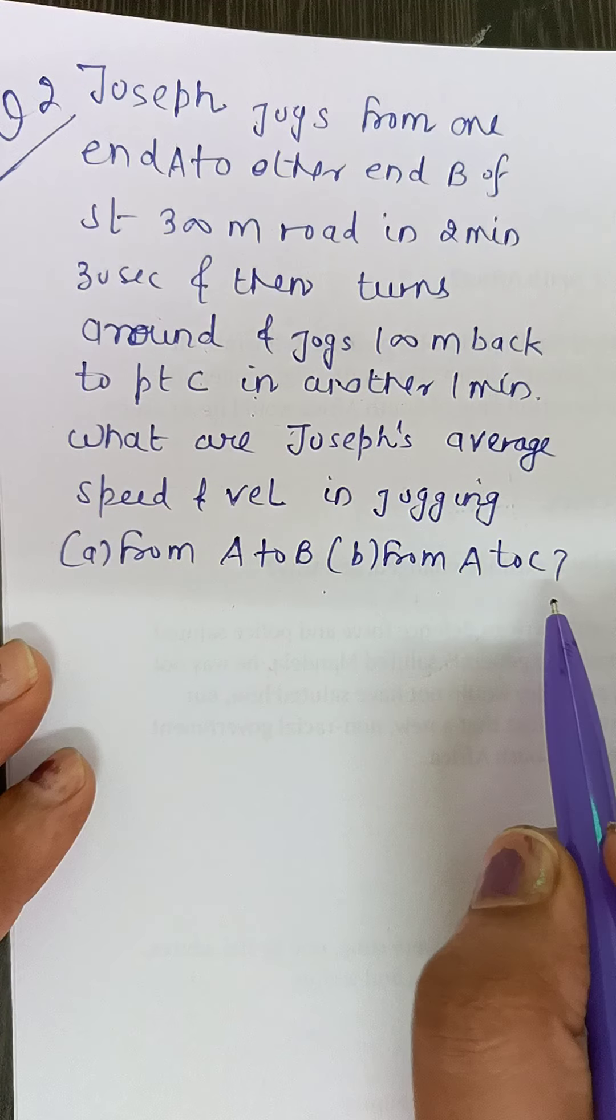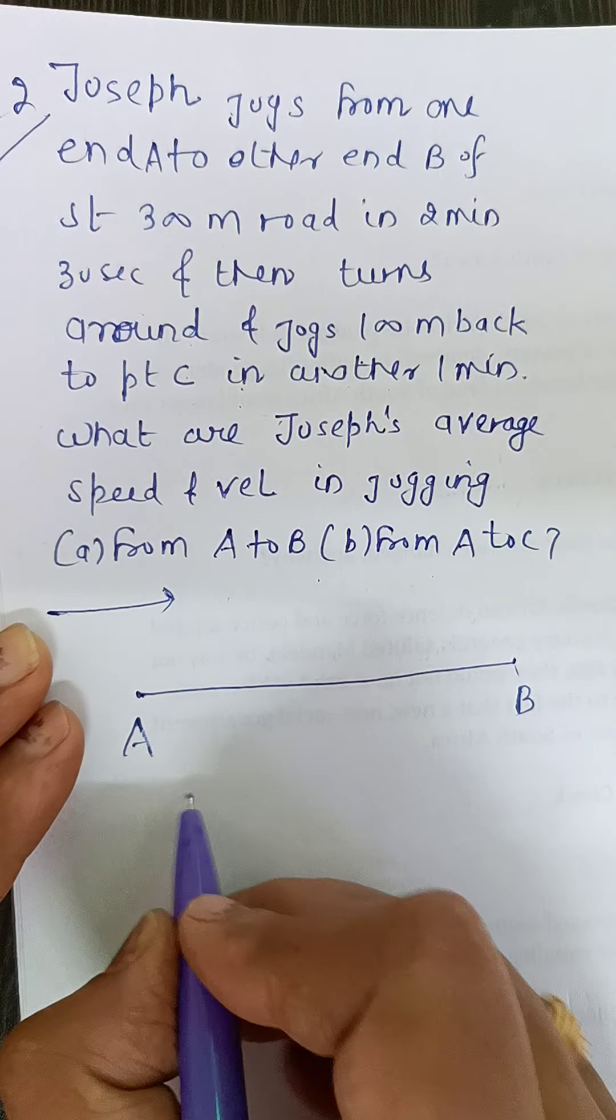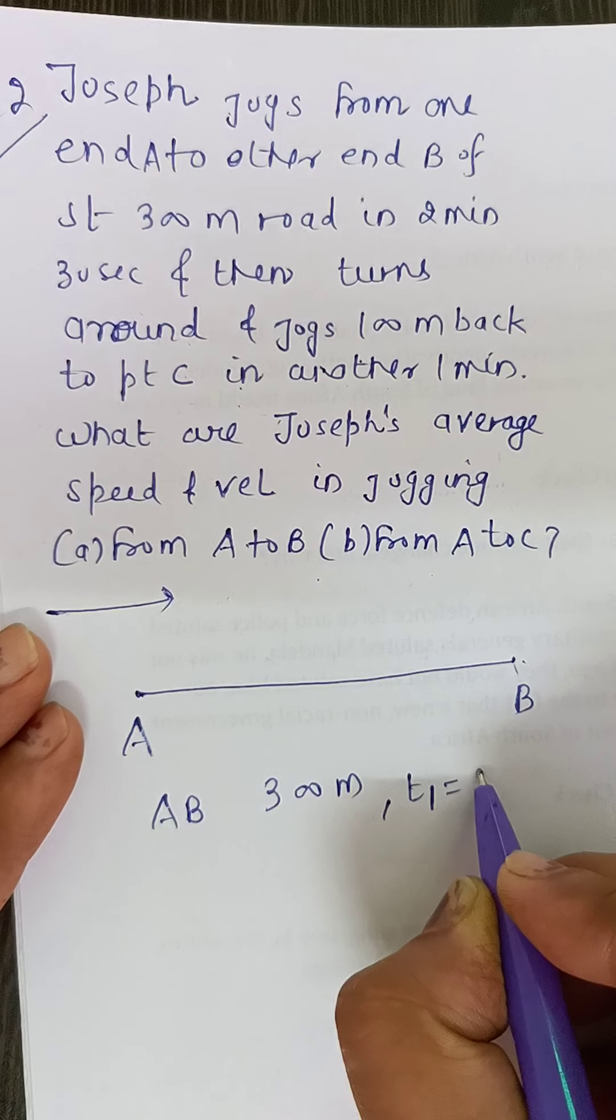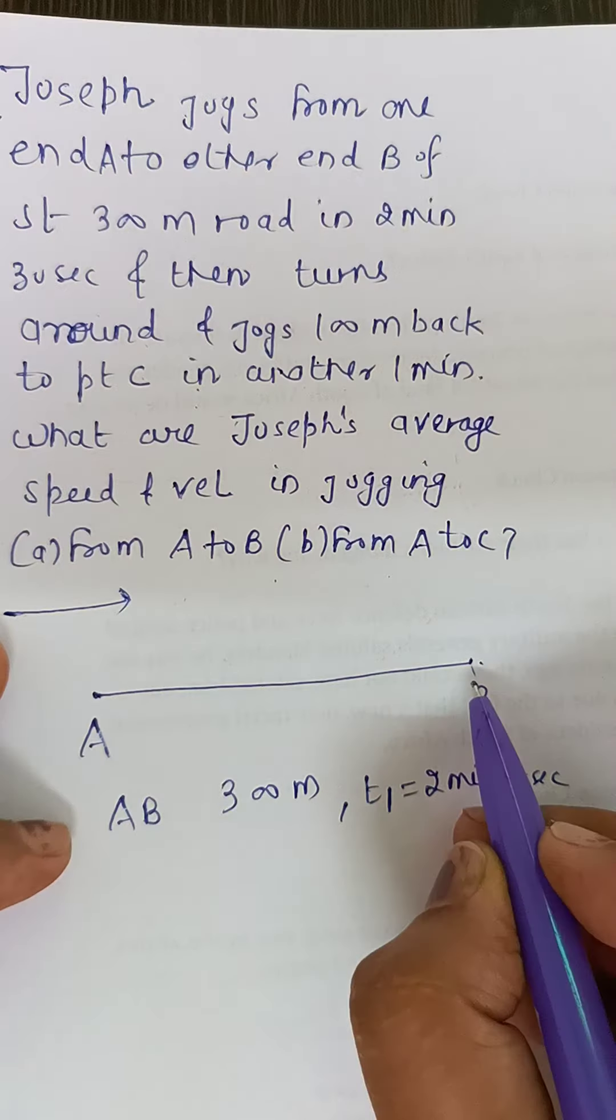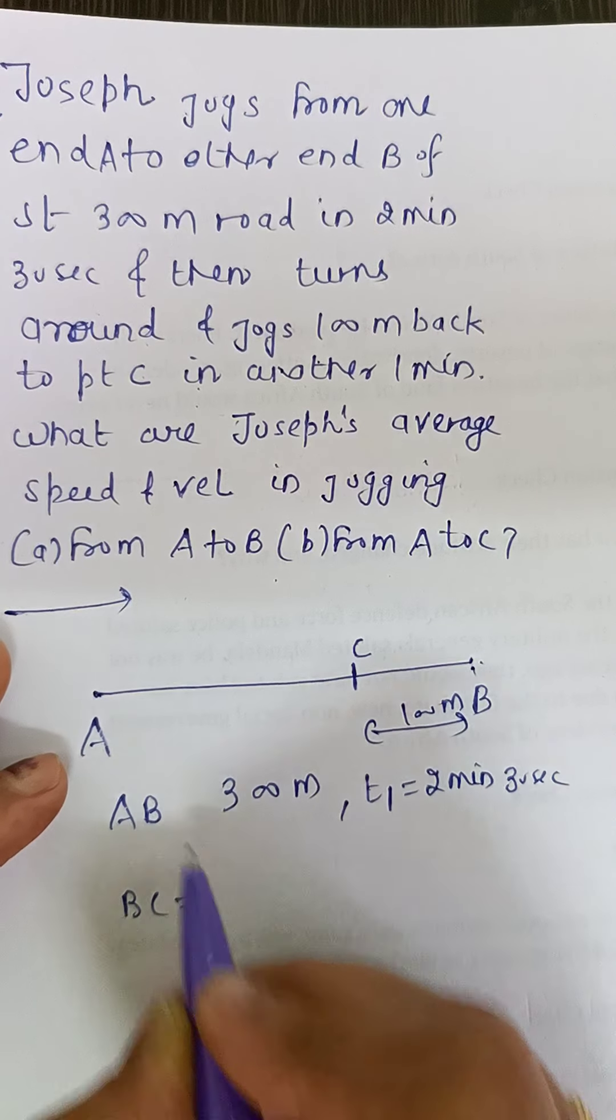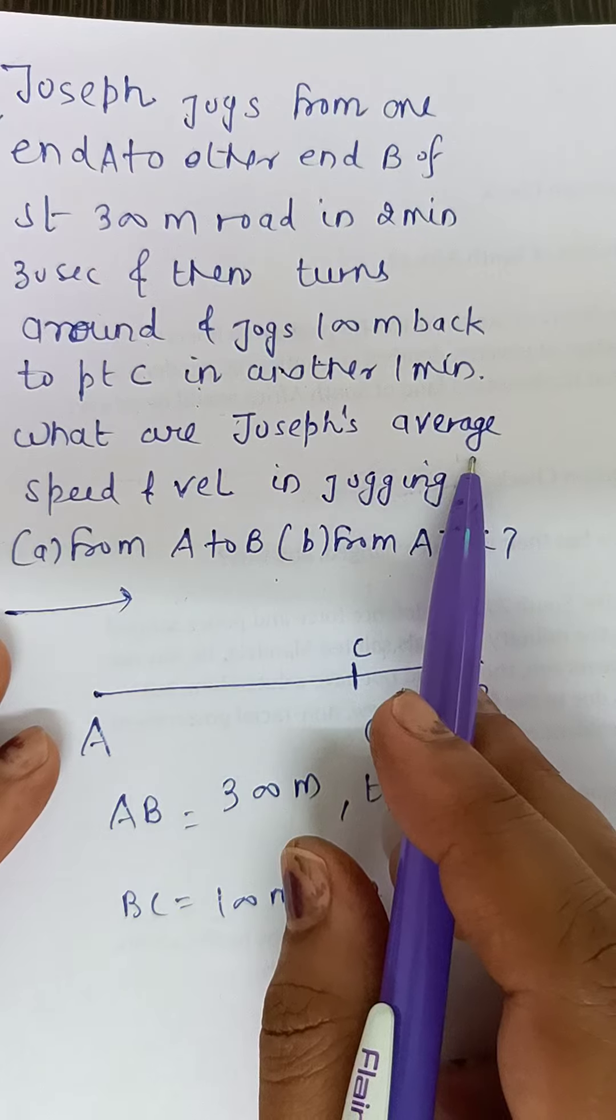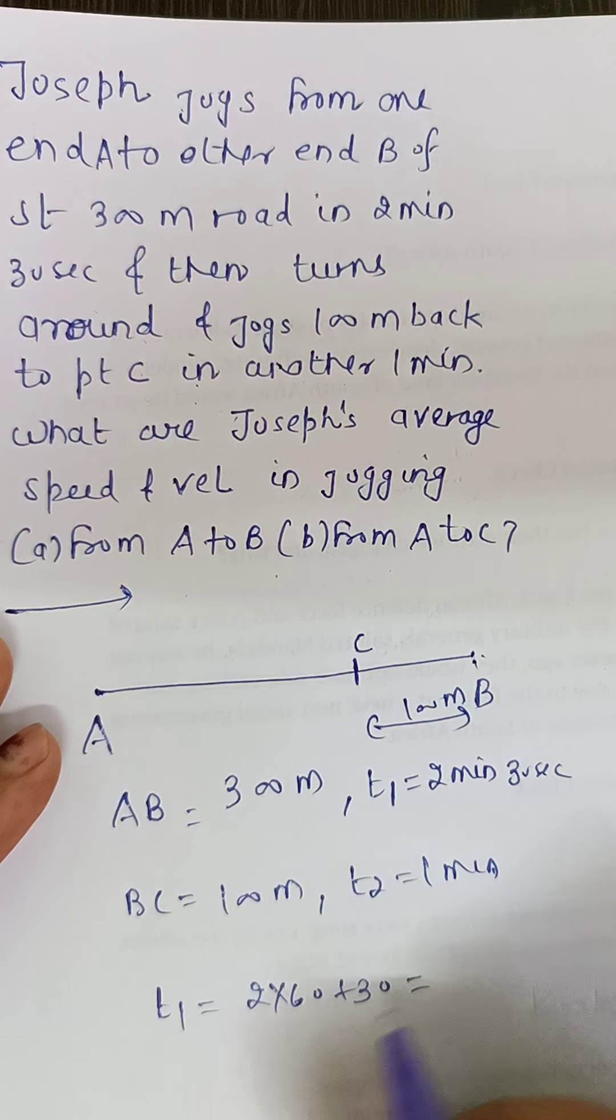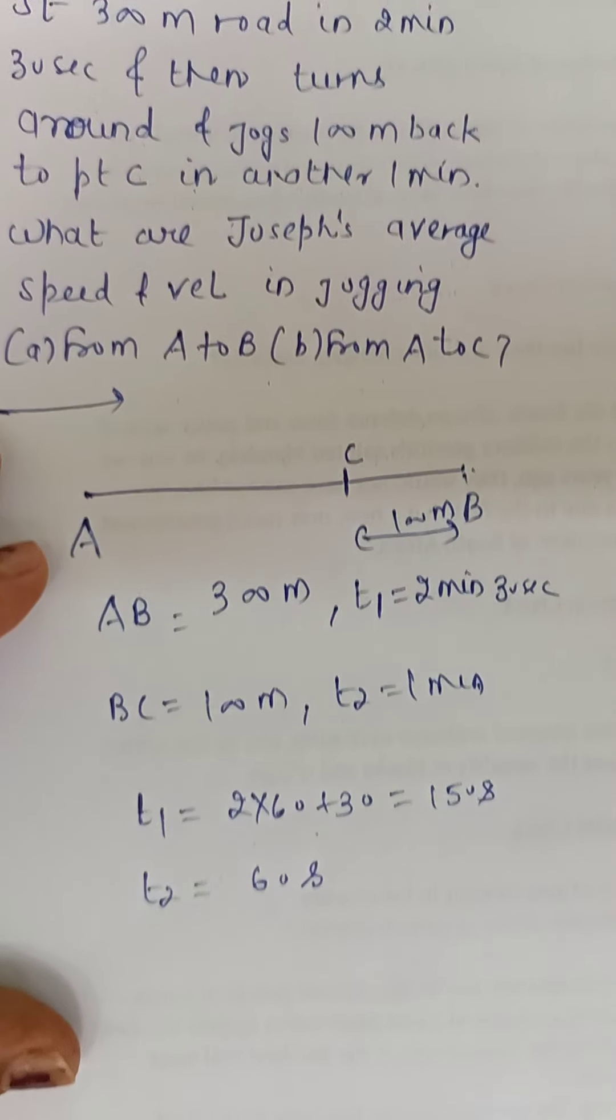First we make a figure for this. A to B, this total distance is given, AB is 300 meter. To reach point B it takes time, let it be t₁. This time is 2 minute 30 seconds. Whatever information is given in statement, we note it. B to C, this distance is covered 100 meter, and B to C is 100 meter which is covered in 1 minute. First if we convert t₁ time to seconds, see how much it comes: this will come out to be 150 seconds. And t₂ is 60 seconds.